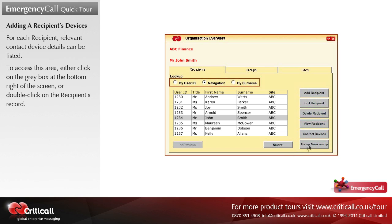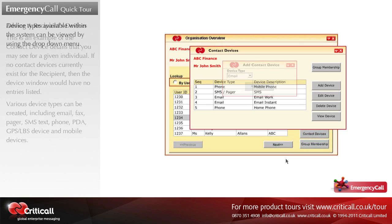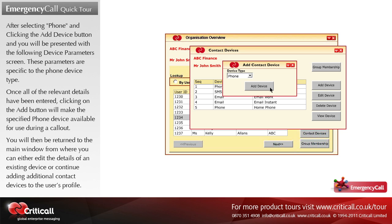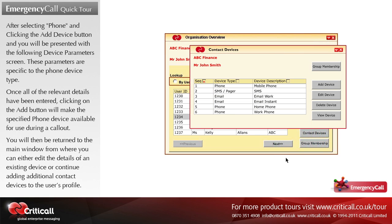This is an example of the contact device details that you may see for a given individual. If no contact devices currently exist for the recipient, the device window would have no entries listed. Various device types can be created, including email, fax, pager, SMS text, phone, PDA, GPS or LBS device, and mobile devices. Device types available within the system can be viewed by using the drop-down menu. After selecting phone and clicking the add device button, you will be presented with the device parameters screen specific to the phone device type. Once all relevant details have been entered, clicking on the add button will make the specified phone device available for use during a call out.